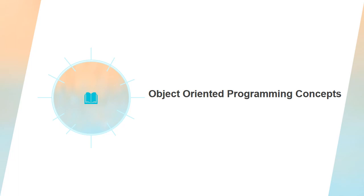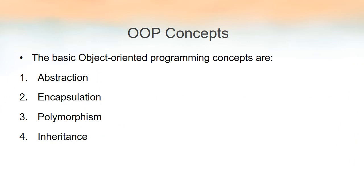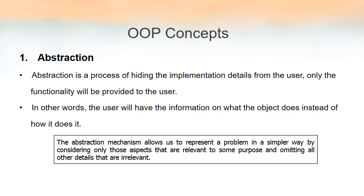In other words, object oriented programming languages are just a category, and all languages that belong to this category must satisfy certain important concepts. The first among those concepts is abstraction. There are four object oriented concepts any object oriented programming language must satisfy: abstraction, encapsulation, polymorphism, and inheritance. Apart from these, object and class — which we covered in a previous video lecture — also belong to the six OOP concepts. In this lecture, we discuss these four.